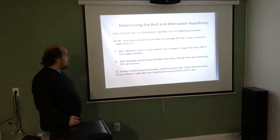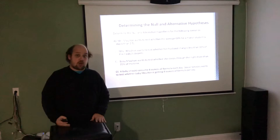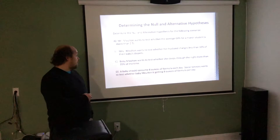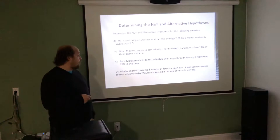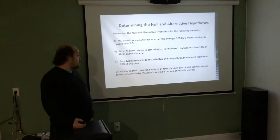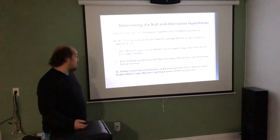For the second problem, Mrs. Moulton wants to test whether her husband changes less than 10% of their baby's diapers. The null would be H₀: p = 0.10, and the alternative would be HA: p < 0.10. Notice two distinctions: the first problem tested a mean (average GPA), while the second tests a proportion (a percentage). In part C, baby Moulton sleeps through the night more than 35% of the time: H₀: p = 0.35, HA: p > 0.35.